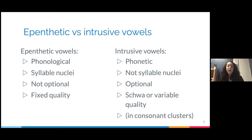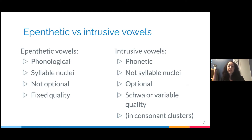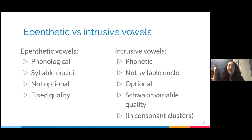When we talk about inserted vowels, the literature has distinguished two groups. The first is canonically epenthetic vowels, and the second is intrusive vowels. Epenthetic vowels are considered phonological vowels — when inserted, they constitute the nucleus of the syllable. They're not optional because they repair a violated structure, and they usually have a fixed quality. Intrusive vowels, on the other hand, are considered phonetic vowels because they do not constitute syllable nuclei. They're optional — their insertion may depend on speech rate, for example — and they have a variable quality, like schwa.